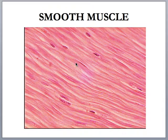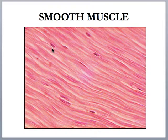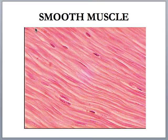Smooth muscle lacks striations and has spindle-shaped fibers. These are uninucleate, so one nucleus per muscle fiber. Remember, muscle fiber just means muscle cell. They're living cells, but because they're elongated, people have referred to them as muscle fibers. Spindle-shaped muscle fibers, one nucleus per cell.